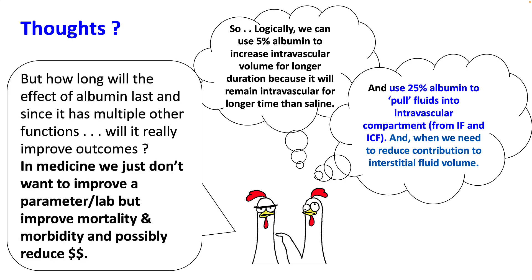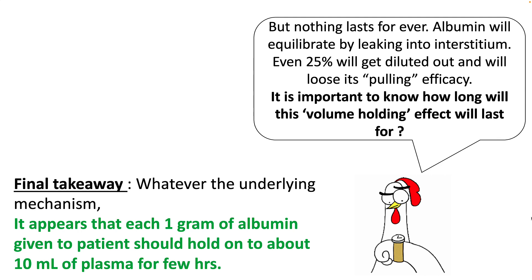However, we also need to answer how long will the effect of albumin last. And since albumin has multiple other functions, will it really improve outcomes for a patient? In medicine, we don't just want to improve a parameter or a lab value, but want to see improvement in mortality, morbidity, and possibly cost of care. We'll talk about more evidence about albumin use and its duration of action in the subsequent lecture. The final takeaway is that, whatever the underlying mechanism, it does appear that each gram of albumin given to the patient should hold on to about 10 ml of plasma for at least a few hours. But whether this increase in intravascular volume improves outcomes will be discussed in the next few lectures.